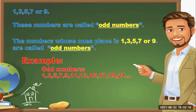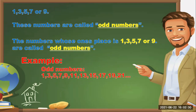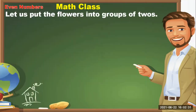The numbers whose ones place is one, three, five, seven, or nine are called odd numbers. Examples of odd numbers: 1, 3, 5, 7, 9, 11, 13, 15, 17, 19, and 21.